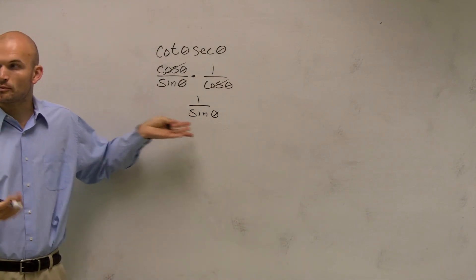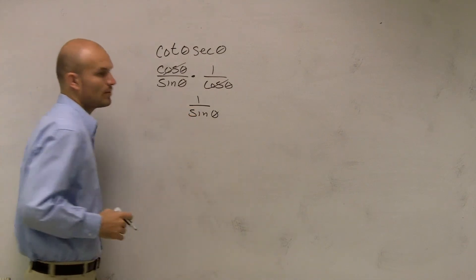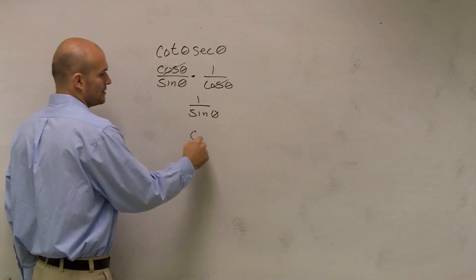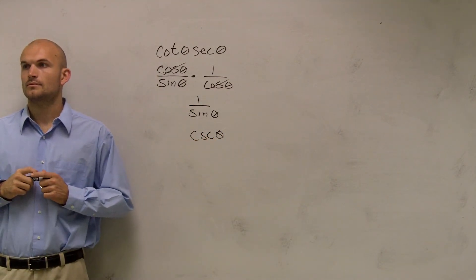Which, like I said, keep it in the simplified form. We don't want to leave it as a fraction. We'll write it as its reciprocal property. 1 over sine is going to be the cosecant of theta.